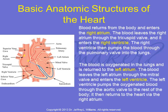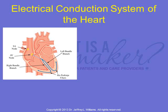The blood is oxygenated in the lungs and is returned to the left atrium. The blood leaves the left atrium through the mitral valve and enters the left ventricle. The left ventricle pumps the oxygenated blood through the aortic valve to the rest of the body, and it then returns the blood to the heart via the right atrium.